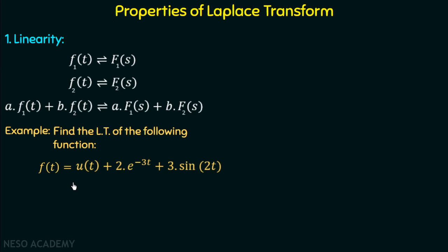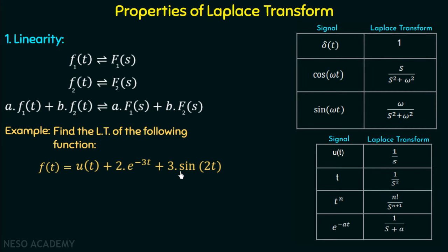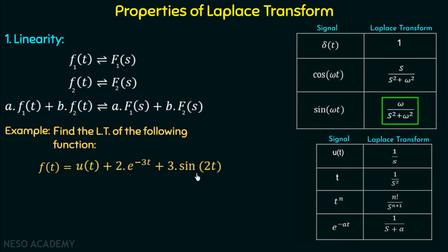We have the Laplace transforms of these three functions from the table discussed previously. The Laplace transform of u(t) is 1/s. The Laplace transform of e^{-at} is 1/(s+a), so for e^{-3t} it is 1/(s+3). The Laplace transform of sin(ωt) is ω/(s²+ω²). Now we will apply the Laplace transform to these three functions and use the linearity property to easily calculate the Laplace transform of f(t).